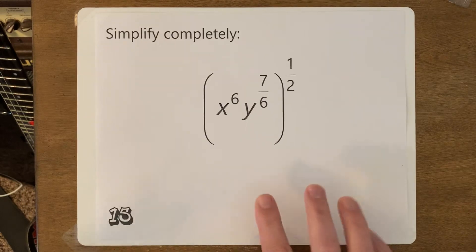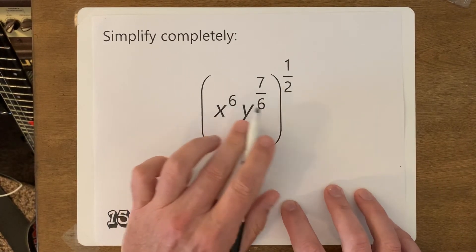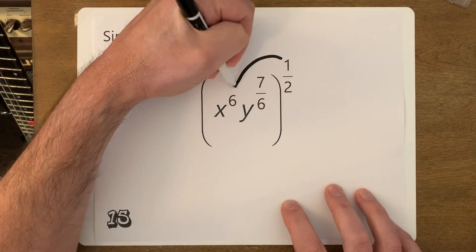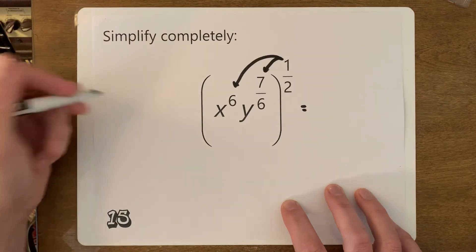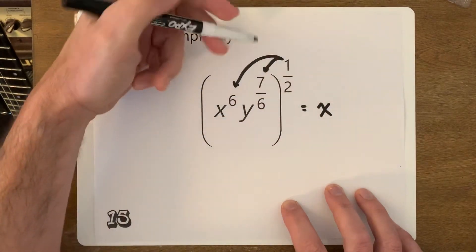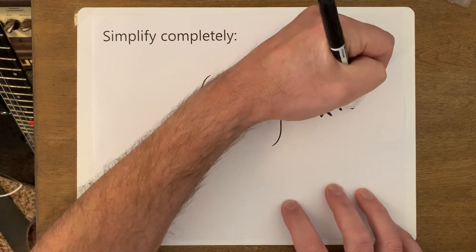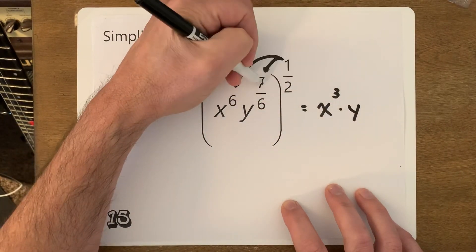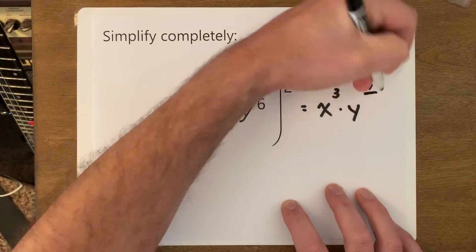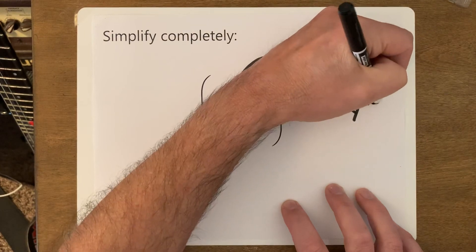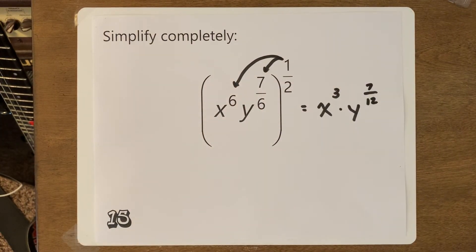This one has a fraction on the outside with a couple of different exponents, so we distribute. For x: 6 times 1 half is 6 over 2, which is 3 — so x cubed. For y: 7 times 1 over 2 — multiply the two fractions — 7 times 1 is 7, and the denominator is 6 times 2 is 12. That fraction can't be simplified, so the final answer is x cubed times y to the 7 over 12.